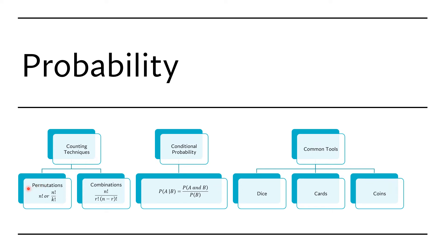There are two types of counting: permutations and combinations. Permutations count arrangements, so with three items A, B, and C, the arrangement ABC is different from BAC, which is different from CAB — there are six different permutations. You compute this using n factorial. If some items repeat, say you have A, A, B, you divide n factorial by k factorial, where k is the number of repeating items.